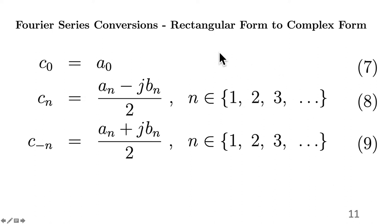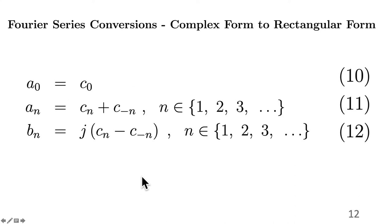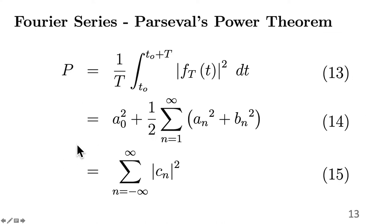To convert the rectangular form of the Fourier series coefficients to the complex form, these three equations would be used. To convert from complex form back to rectangular form, you would use these equations. Parseval's theorem is shown here for power signals — we'll come back to that.